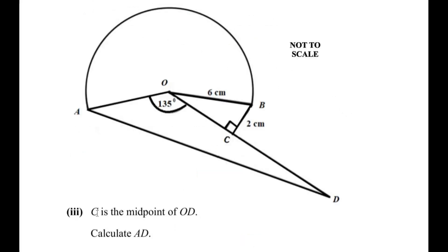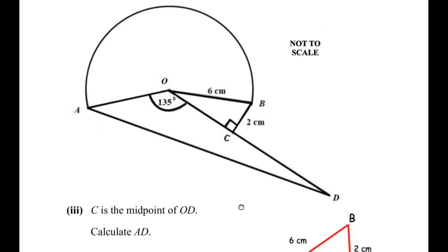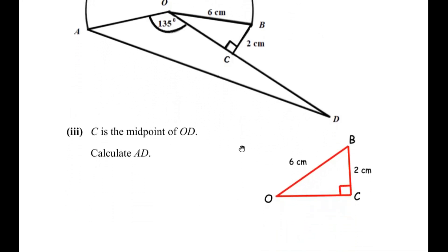The third sub-question states that C is the midpoint of OD, and asks us to calculate the length of AD. We begin by finding the length of OC using right-angle triangle BOC. Here we have redrawn the same triangle: OB is 6 centimeters and BC is 2 centimeters, and we need to find OC.